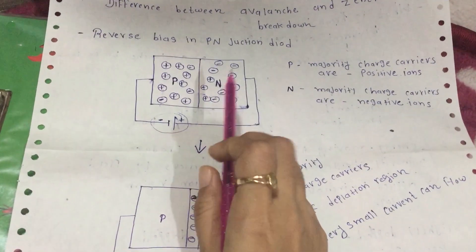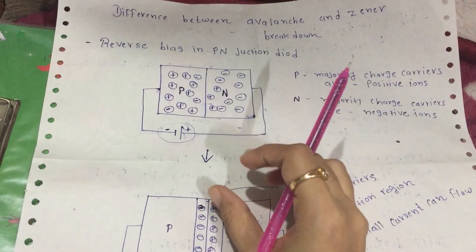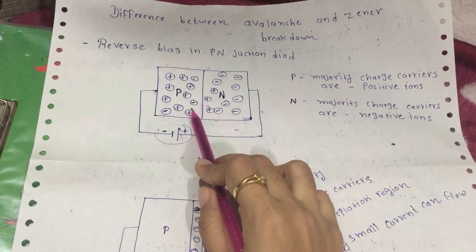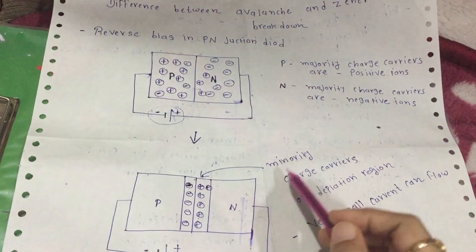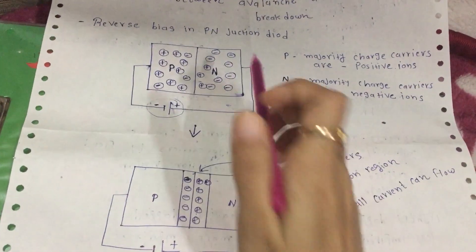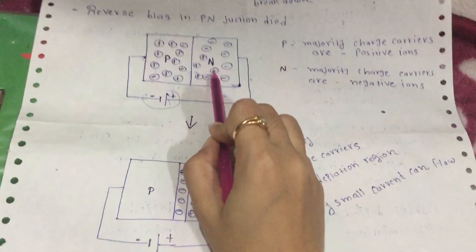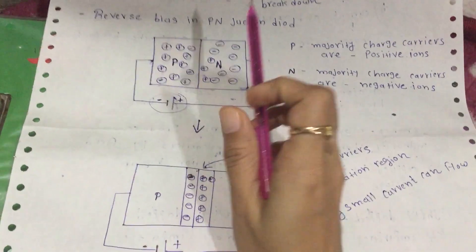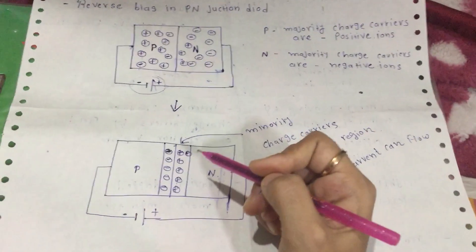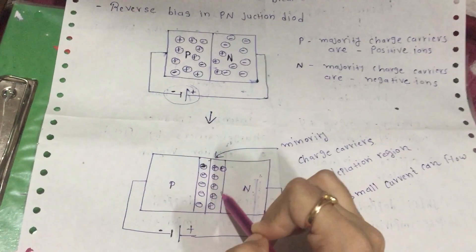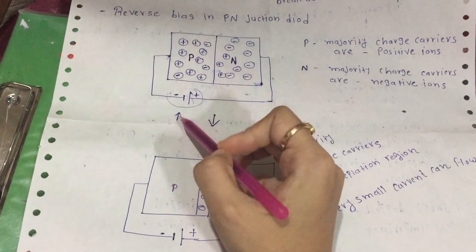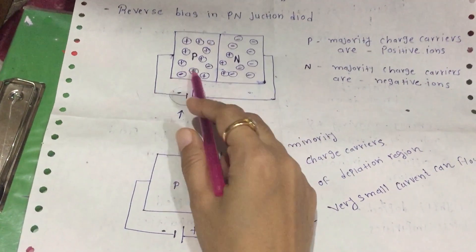In avalanche breakdown, there is a small amount of doping — the P-type and N-type are lightly doped. Lightly doped means the minority charge is less. So when minority charge is less on both the P-side and N-side, there is a depletion region, but it is not strong because the doping is light.